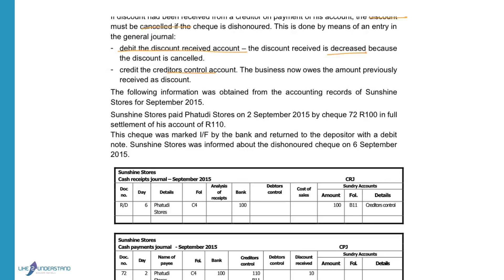Looking at the example: we paid R100 in full settlement of R110. The check is dishonoured and returned by the bank. When we paid out the check, we recorded it in the cash payments journal — R100 in the bank column, R10 discount received, and we reduced the creditors by a total of R110.